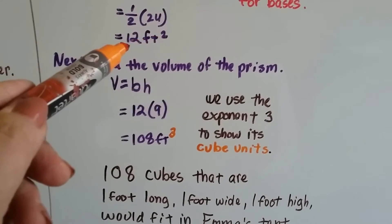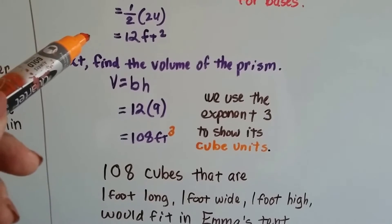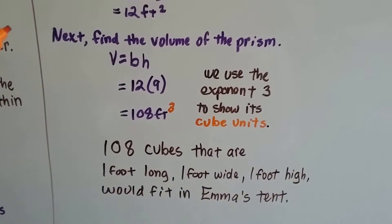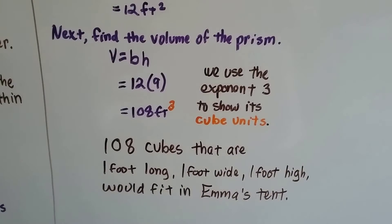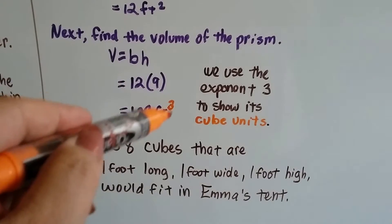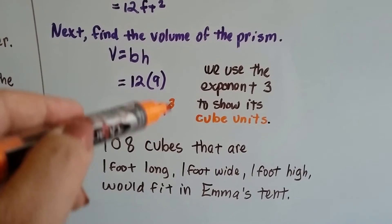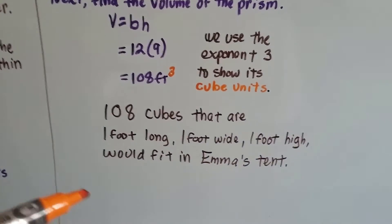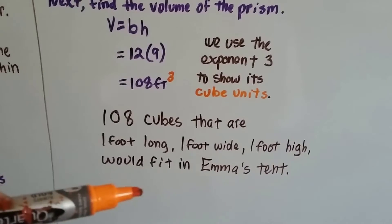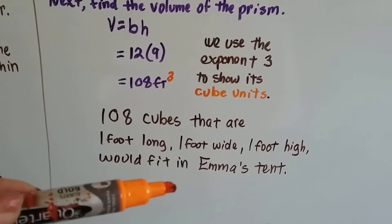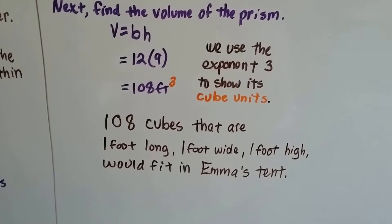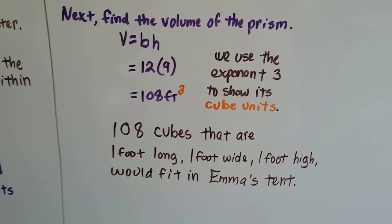When we have a two, those are square units for a flat surface area that's 2D. Three units shows length, width, and height. So that's cube units. So that means there's 108 cubes that are one foot long, one foot wide, and one foot high that would fit in Emma's tent.